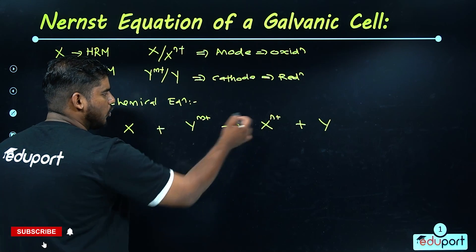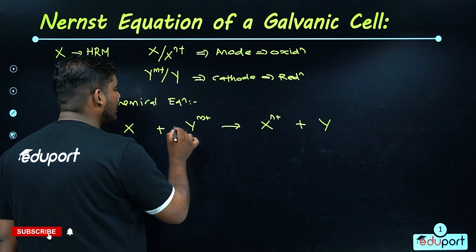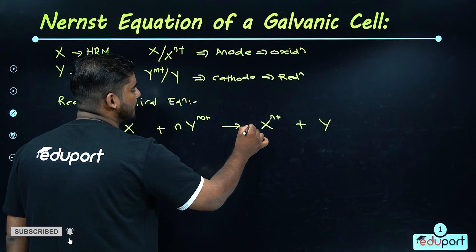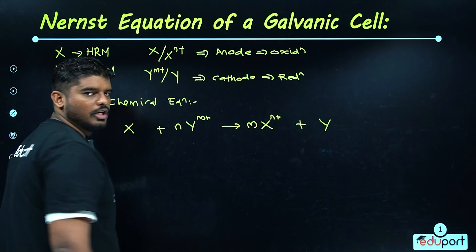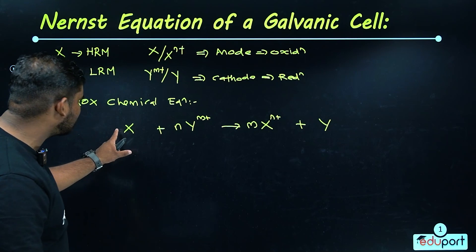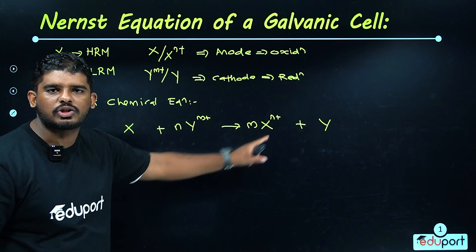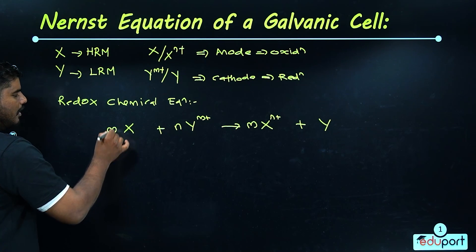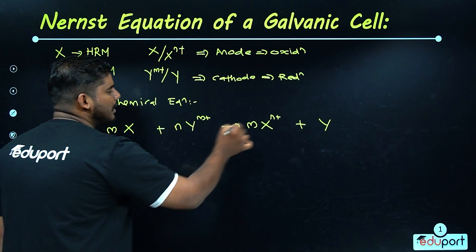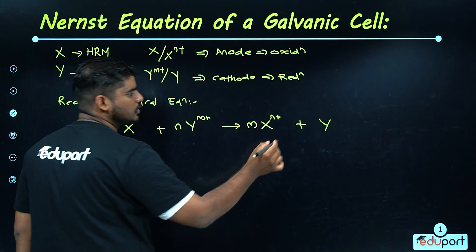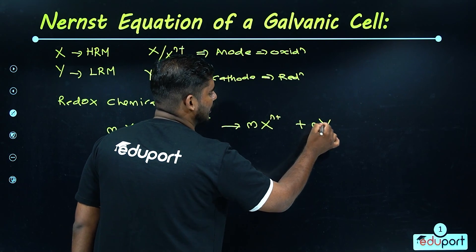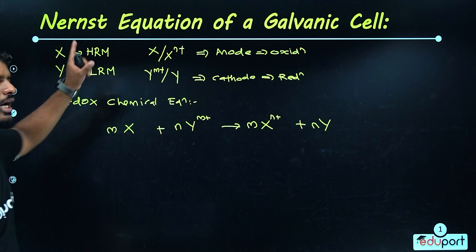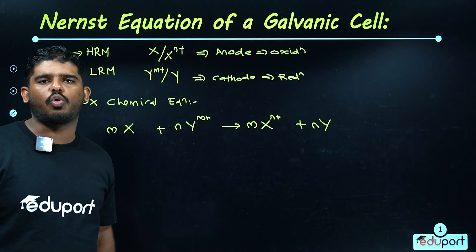To balance the equation, we cross-multiply: we have n and m, so we add m in front of X and n in front of Y. This gives us the balanced redox chemical equation.